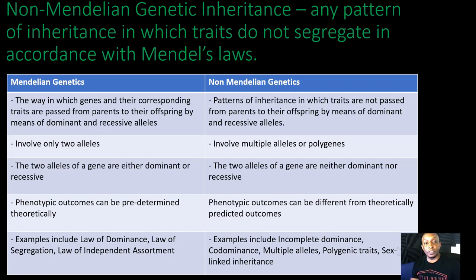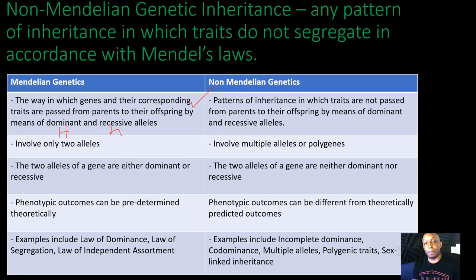If we take a look at Mendelian genetics versus non-Mendelian genetics — in Mendelian genetics, it's the way in which genes and their corresponding traits are passed from parents to their offspring by means of dominant and recessive alleles. This is where you get that uppercase letter and then your lowercase letter, and we talk about homozygous dominant, heterozygous dominant, and homozygous recessive.